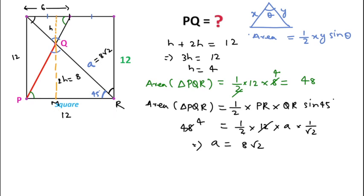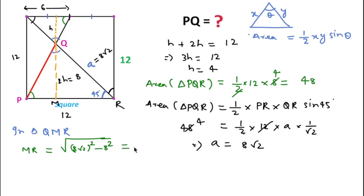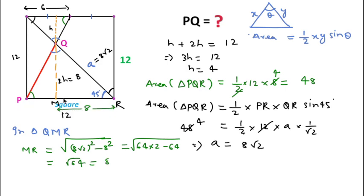Triangle QMR is a right-angle triangle, so using the Pythagorean theorem we can find MR. With QR equal to 8 root 2, we calculate MR equal to 8. Since PR is 12 and MR is 8, PM will be 4 units.